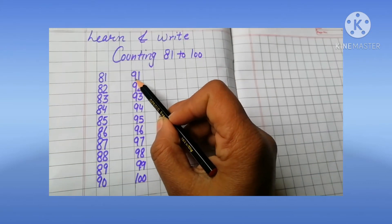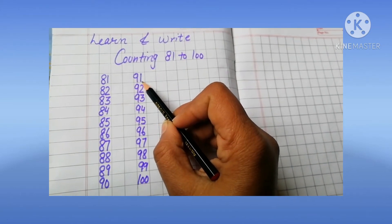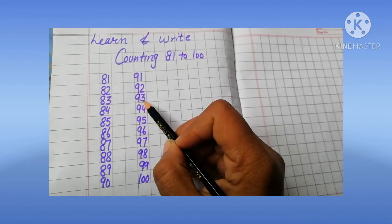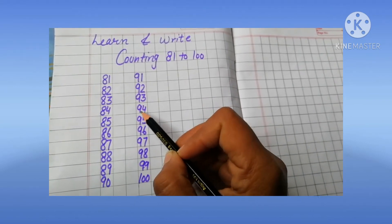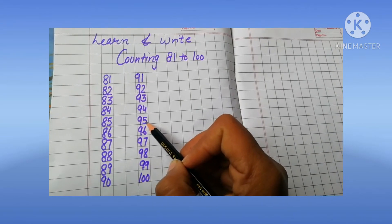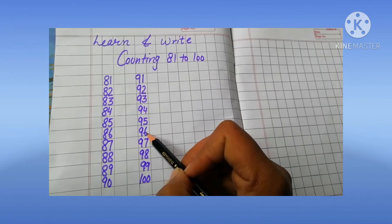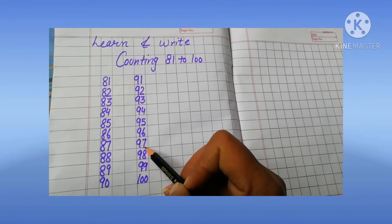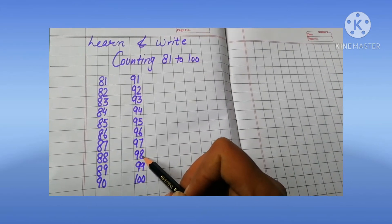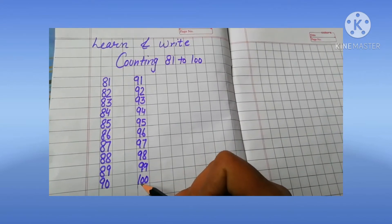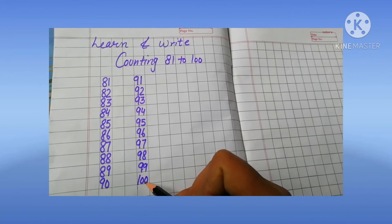Next is 91, 91, 92, 92, 93, 93, 94, 94, 95, 95, 96, 96, 97, 97, 98, 98, 99, 99, 100, 100.